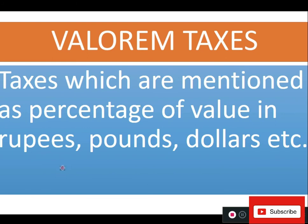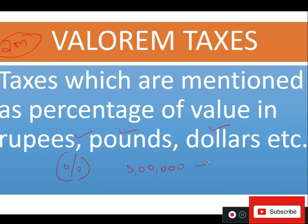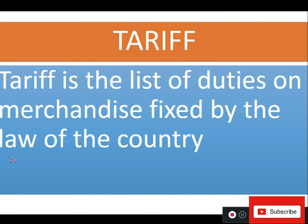Specific taxes are calculated on a per-unit basis — per kilogram, per liter, etc. In contrast, ad valorem taxes are calculated as a percentage of value. For example, if income is 5 lakh and the income tax rate is 5%, then 5% of 5 lakh equals ₹25,000 as income tax. So the tax is calculated according to a percentage — that is the value-based or ad valorem approach.